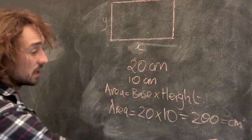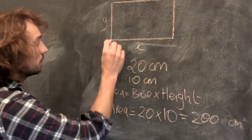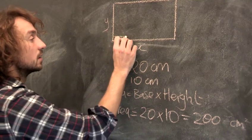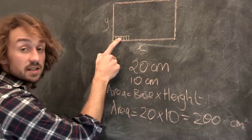Finally, what does that mean? What does 200 centimetres squared mean? It means that within here, if I draw little squares like this, each one of these little squares is one centimetre squared.